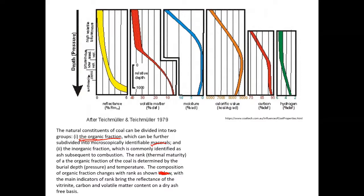The rank of the organic fraction of coal is determined by burial depth and temperature. The composition of the organic fraction changes with rank, as shown in diagrams, with the main indicators of rank being the reflectance of the vitrinite, carbon content, and volatile matter content on a dry ash-free basis. In the high volatile bituminous stage, the reflectance is quite low. In the bituminous stage, low volatile and medium volatile reflectance increases, and in semi-anthracite and anthracite, the reflectance is very high.